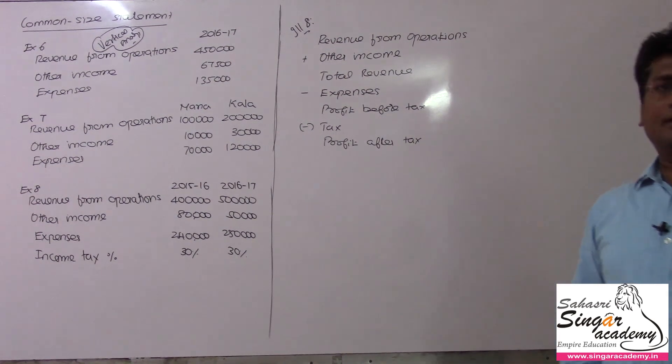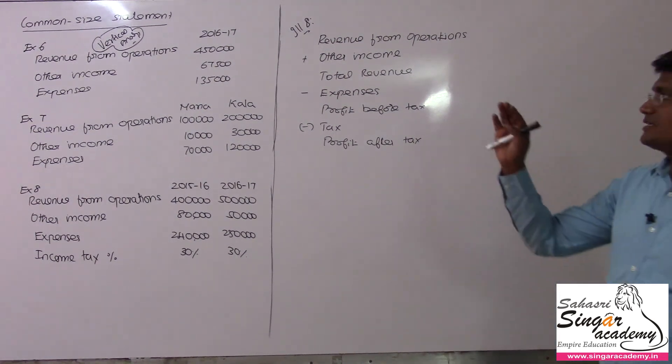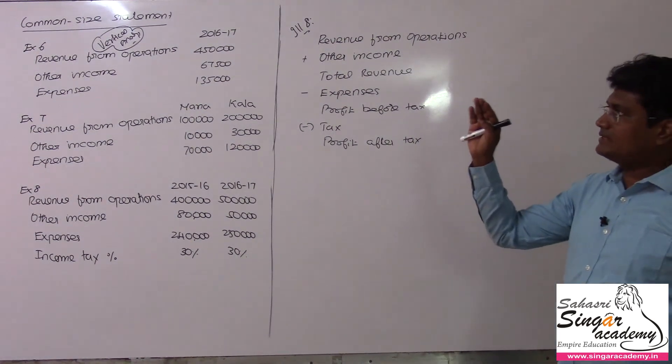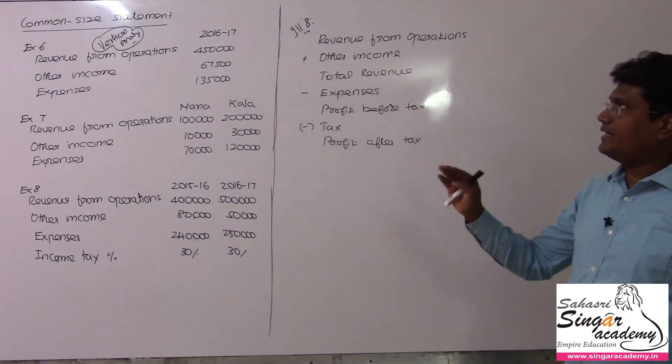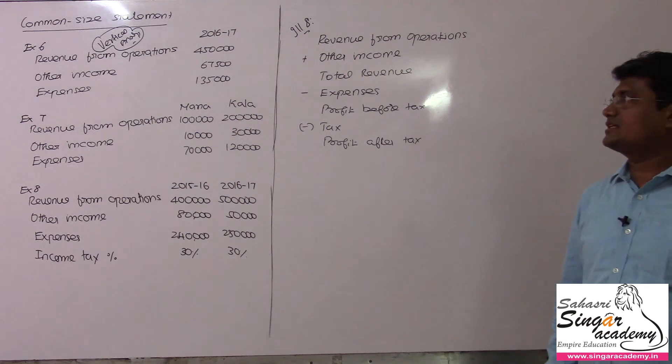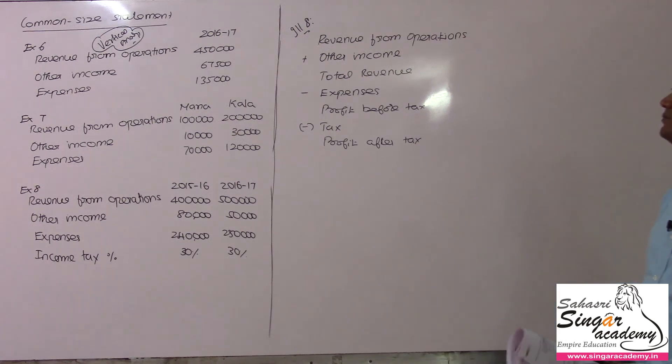In this lecture, we are going to discuss examples 6, 7, and 8 in the Common Size Statement.